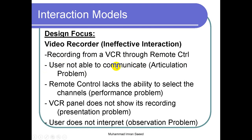The first problem is that the user is not able to communicate — the user does not know how to use the remote control to get that recording or to get the VCR to record a particular channel. This problem is known as the articulation problem: the user is not able to provide the proper input through the remote control to the VCR. The user is unable to articulate, unable to provide the proper input.